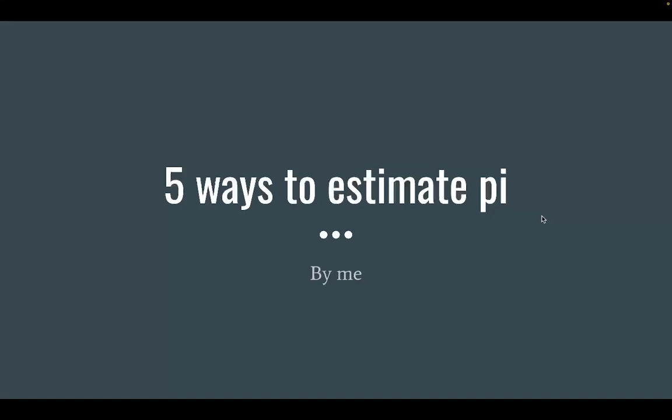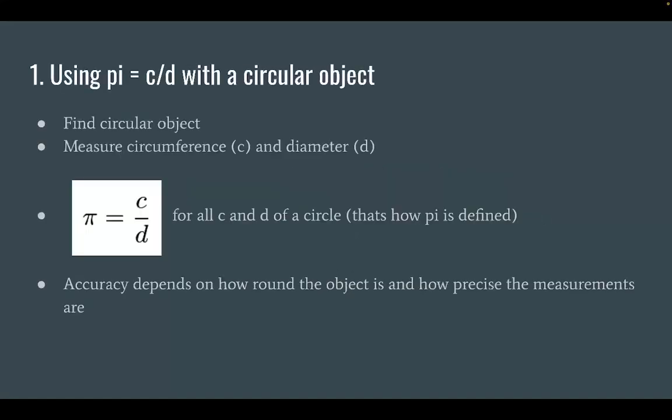This is five different ways to estimate pi by me. So our first way to estimate pi is by using the formula pi equals circumference over diameter, which was originally how it was defined.